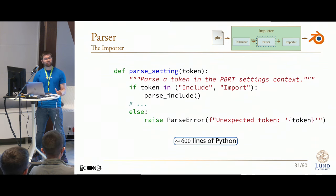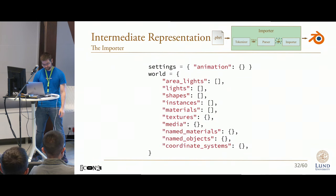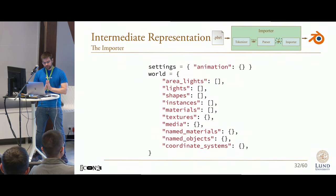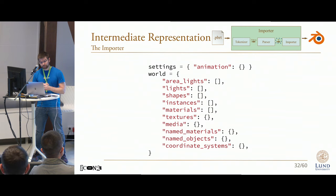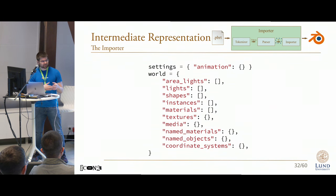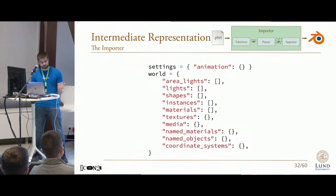Even if you would need lots of memory to actually contain the intermediate representation for that scene — I need around 64 gigs just to contain it. When the parser is done, the intermediate representation looks something like this. Higher level things such as rendering parameters are gathered in a settings dictionary, and world objects themselves are collected in another dictionary, separating out shapes, instances, lights, materials, and any other scene-specific objects.